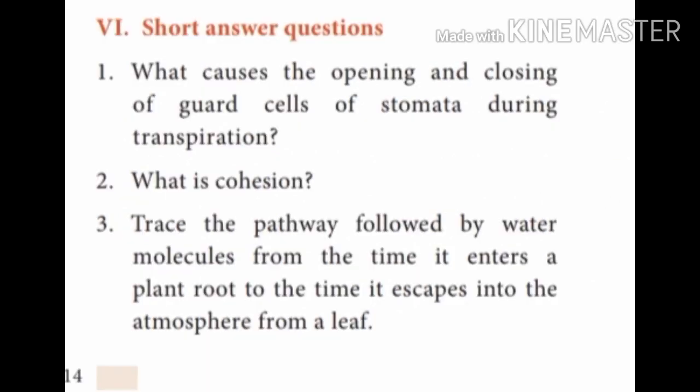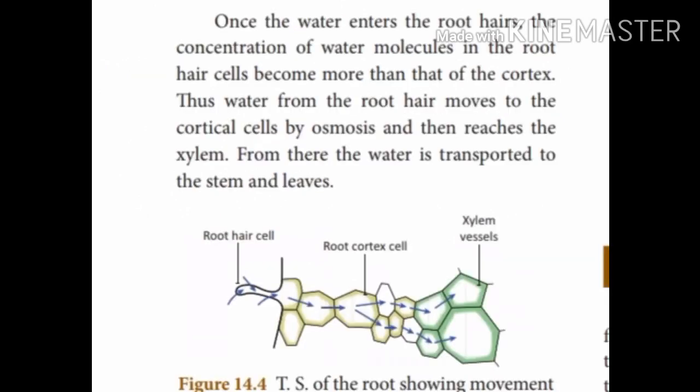Third question: Trace the pathway followed by water molecules from the time it enters the plant root to the time it escapes into the atmosphere from the leaf. Write this answer with arrows, one beneath the other. First, the water molecule from the soil enters through the root hair. From the root hair to root hair cells, from root hair cells to cortical cells, from cortical cells to the xylem.